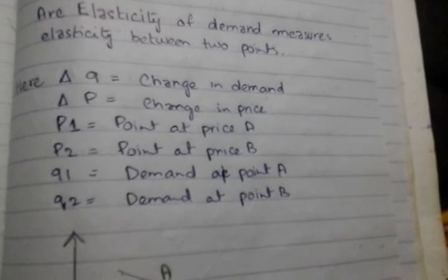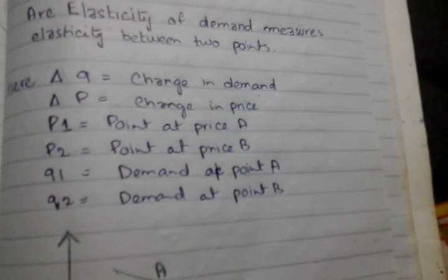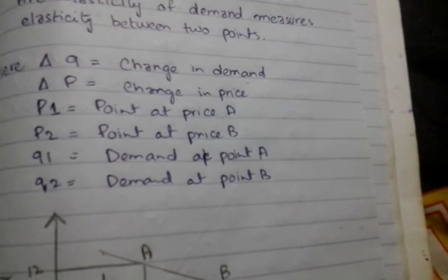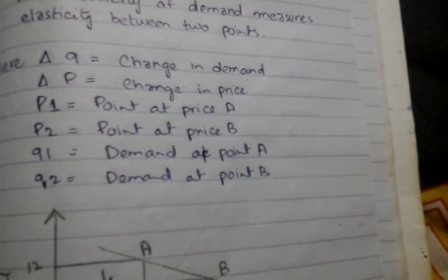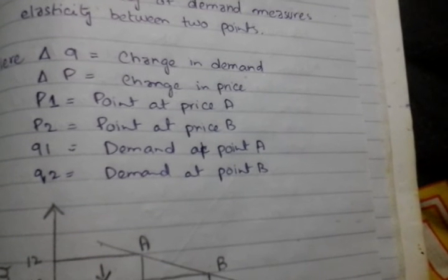In order to calculate arc elasticity of demand, here we have: Delta Q equals change in demand, Delta P equals change in price, P1 equals price at point A, P2 equals price at point B, Q1 equals demand at point A, Q2 equals demand at point B.